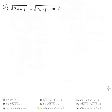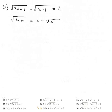Problem 29 is similar. Isolate one radical: x equals 2 plus the square root of x minus 1, then square both sides.